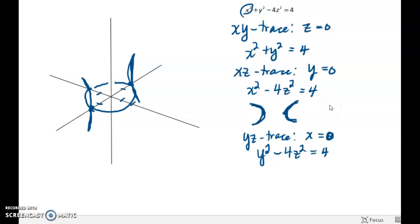Again, this is a hyperbola. This hyperbola has y-intercepts. If you set z equal to 0, you get y squared equals 4, which says y is plus or minus 2.